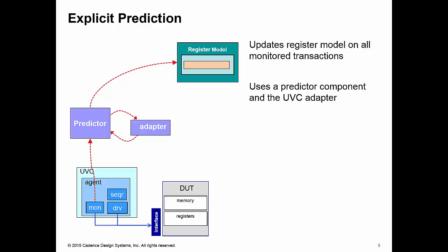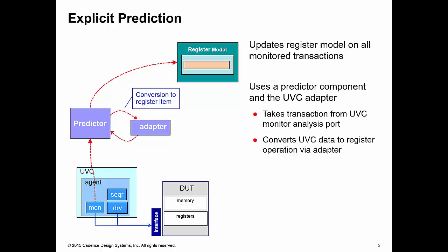We connect the predictor to the analysis port of your monitor. We pick up every transaction which is sent by that UVC into your DUT. We then use the adapter of the UVC to convert the UVC data into a generic register operation. Then the predictor uses that generic operation to update your register model.